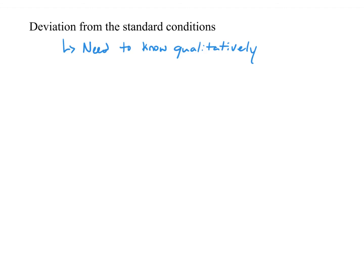In years past, the College Board deemed this particular information not important for the AP test, but in recent years the concept has been reintroduced — maybe not quantitatively, but definitely qualitatively. Next, we're going to look at what happens to a cell in non-standard conditions: how can you squeeze more juice out of a cell, get a battery to produce more volts, or make it run longer? To do this, we need the Nernst equation, which you can find on your formula sheet.